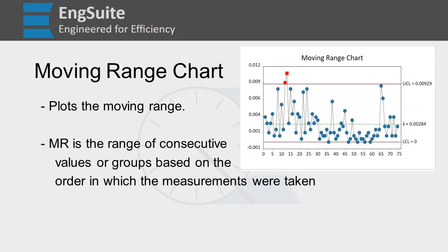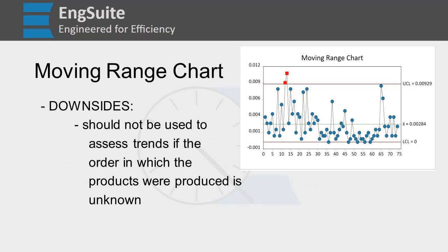Our next chart is the moving range chart, which plots the moving range - the range of consecutive values or subgroups based on the order measurements are taken. You should not use this if you don't know the order products were produced. If you do, it's a great way to understand your process. Does your process vary a lot between consecutive parts? Does it vary towards the beginning or end? It lets you know how stable your process is. You have an upper and lower control limit. Generally, the lower control limit is zero because you can't have a range less than zero. Values above the upper control limit are designated with red squares.